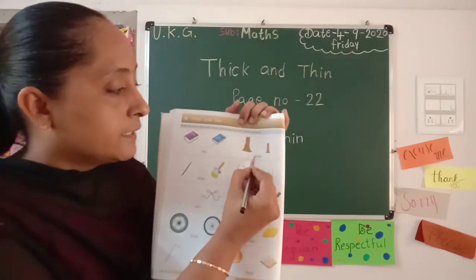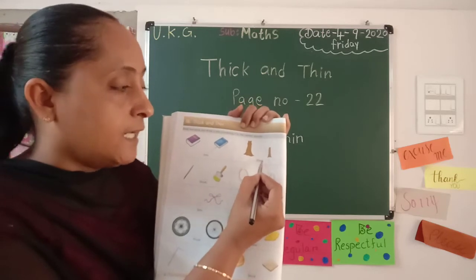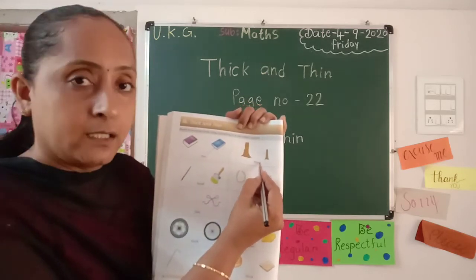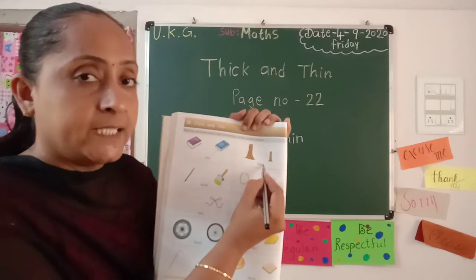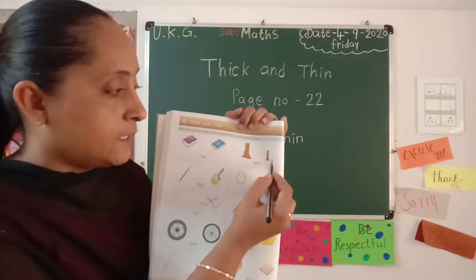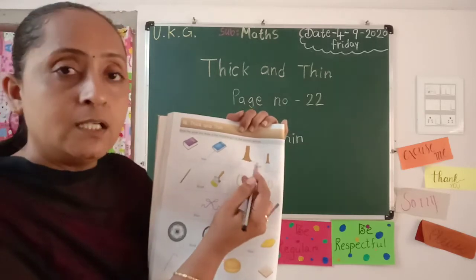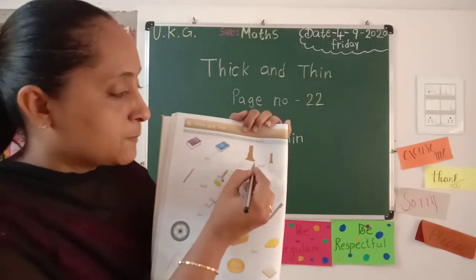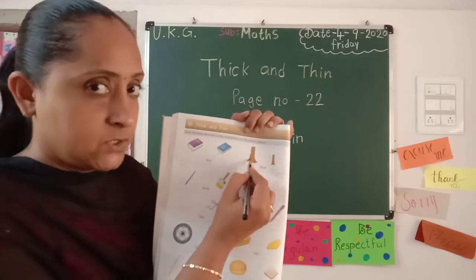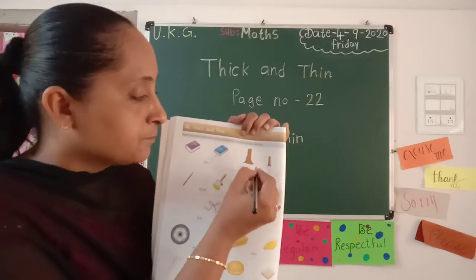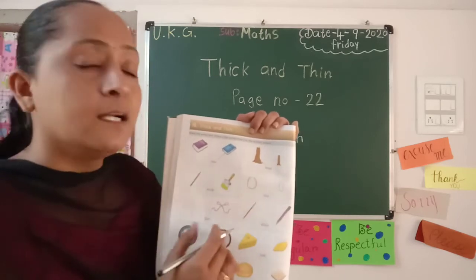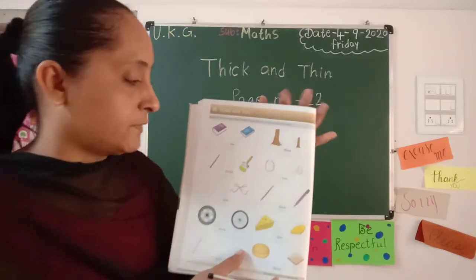Next. T-H-I-C-K thick. Thick yani chada. Kis pe hume tick karna hai? In dono mein se kunsa zyada hai? Us pe hum tick karenge. Yes — yeh moti hai na, jis pe hume aise tick. Thick yani chada — is pe hume aise choice karenge. Yes.